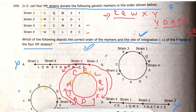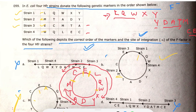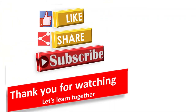Looking at option C: there is no integration at L or at E and M, so option C is wrong. Looking at option B: the gene order matches, and the integration site for strain one is at L — correct. For strain two it is at M — correct. For strain three it is at E — correct. And for strain four it is at W — correct. So option B is the correct answer.